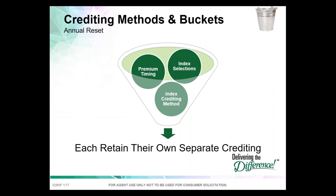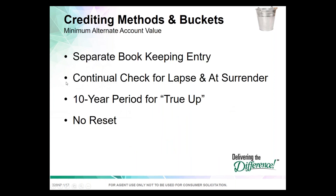When you combine different index crediting methods, different index selections, and different timing, you can have multiple buckets or segments in a life policy — five, six, ten, twenty, or more. On the annual statement, the client gets a combined index credit each month. If they want it broken down, they can contact customer service or access the information on our website. Each segment is a separate bookkeeping entry because they may have different caps and pars, and different starting and ending points.